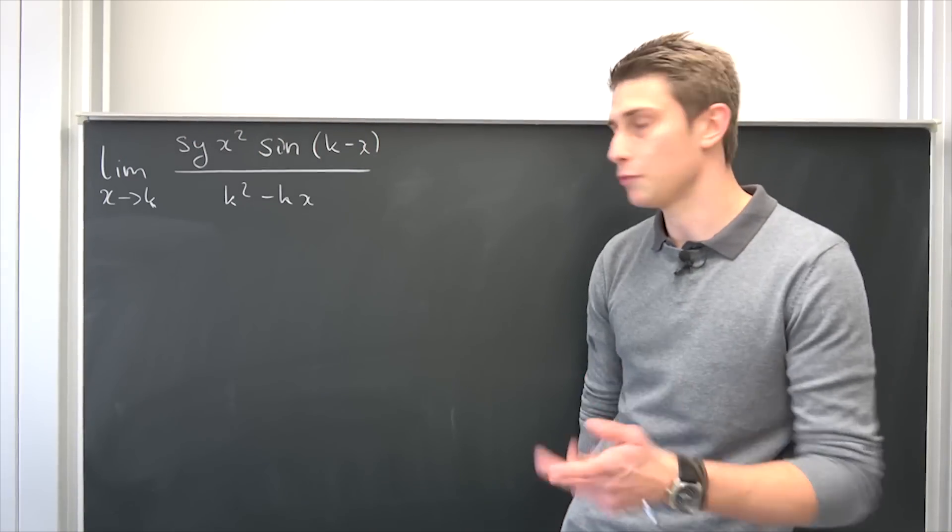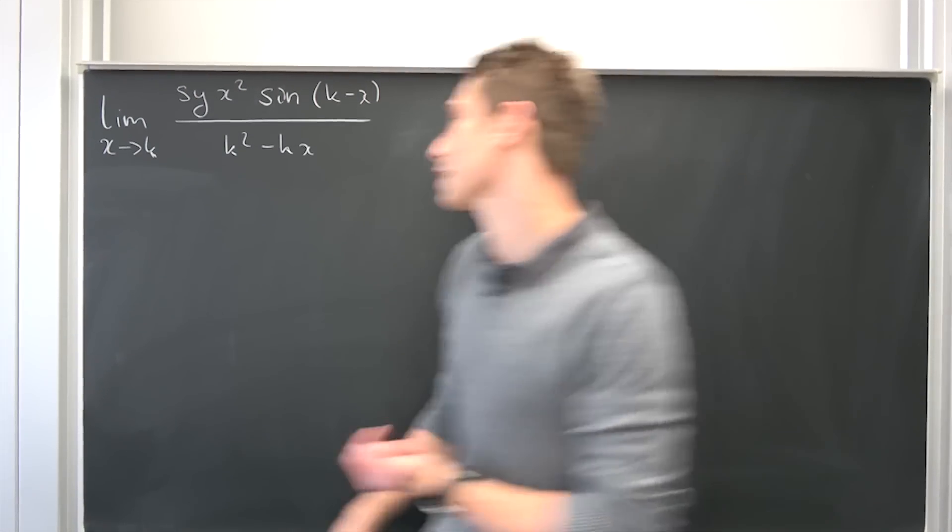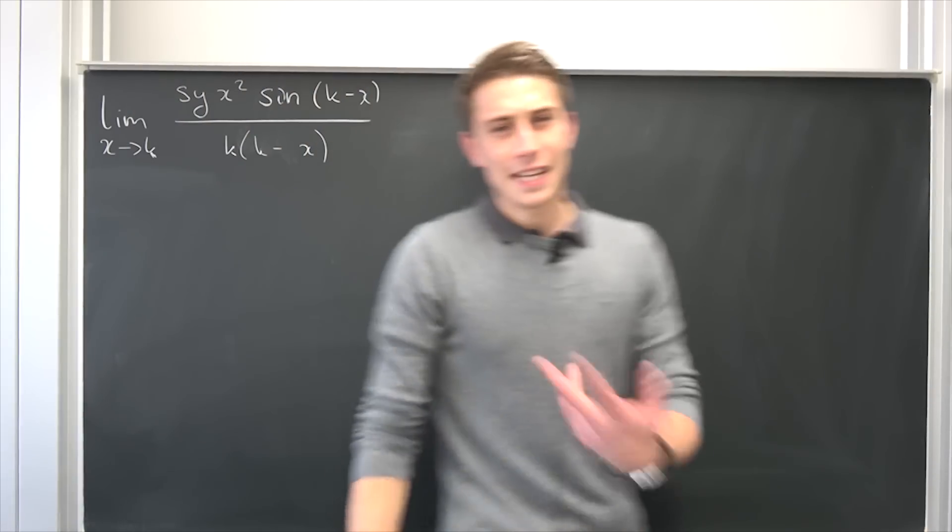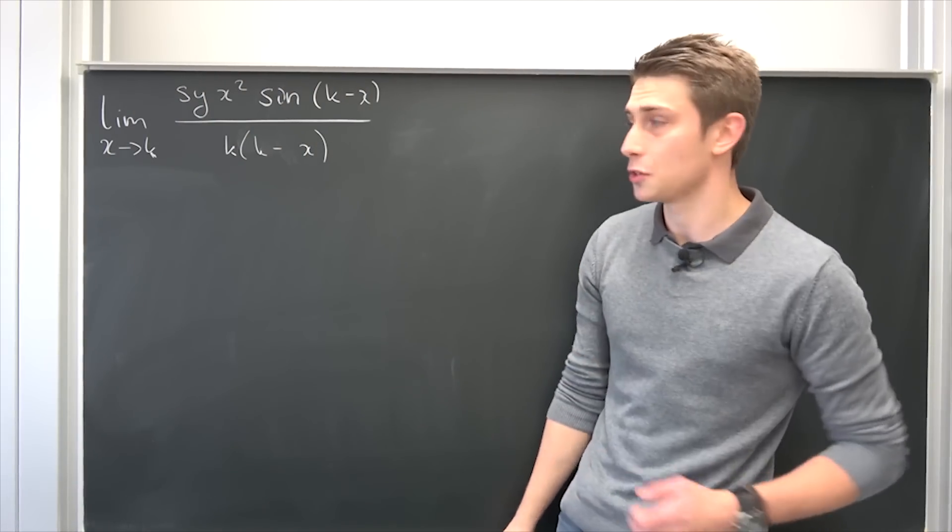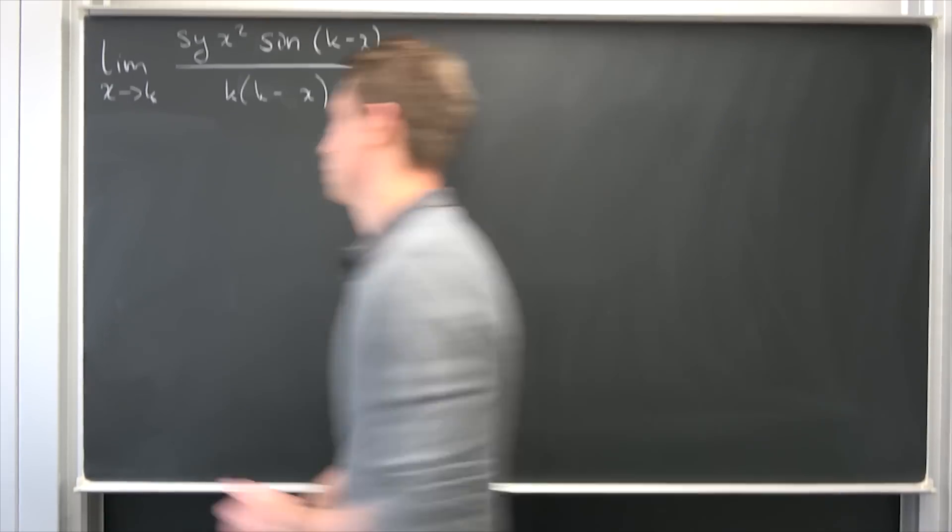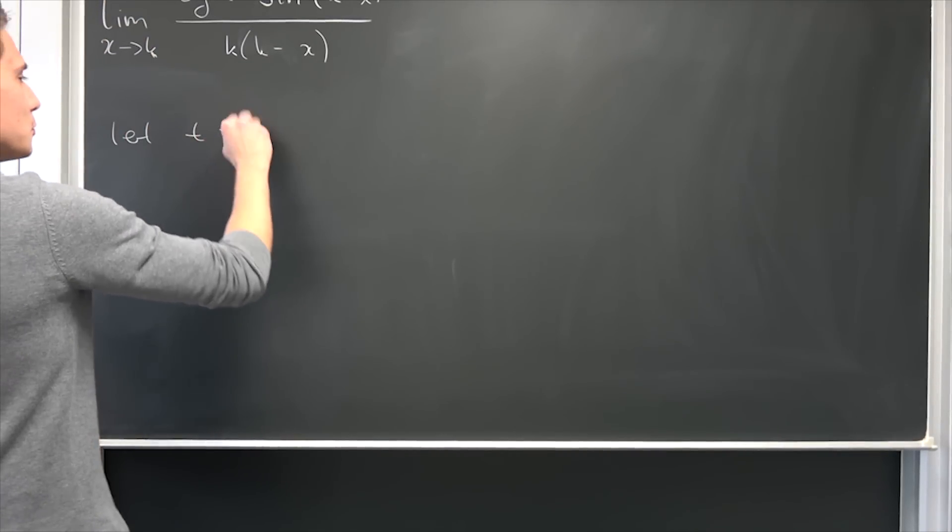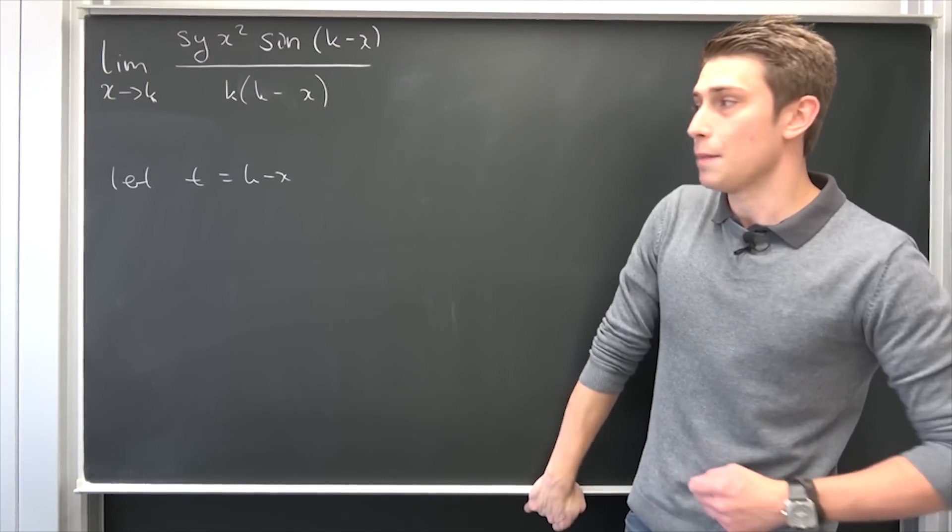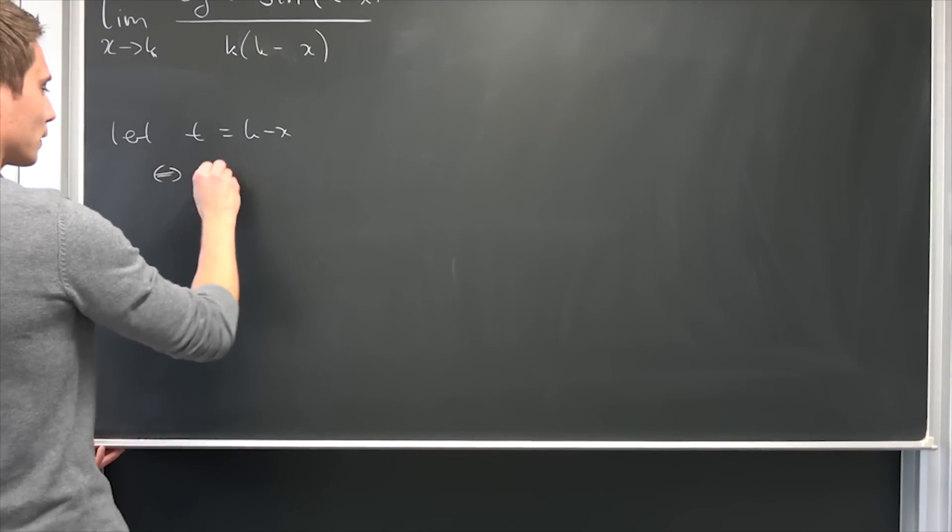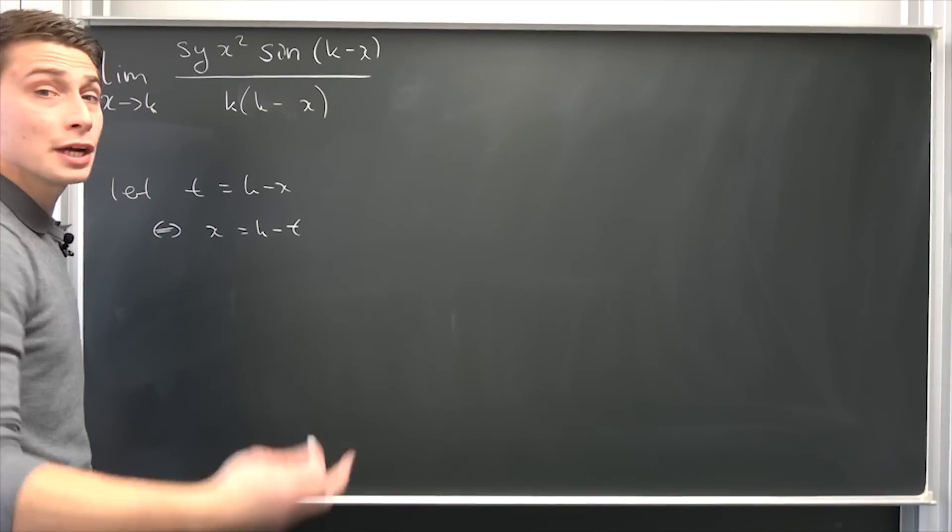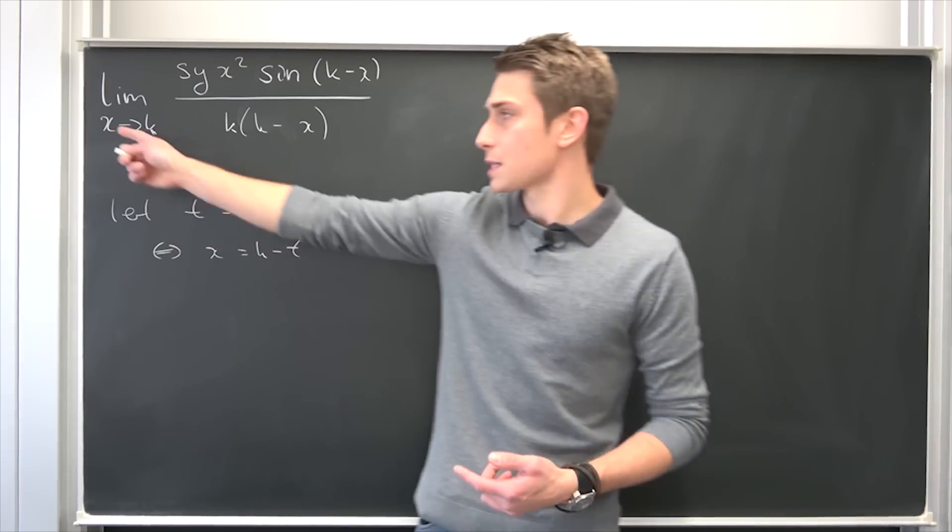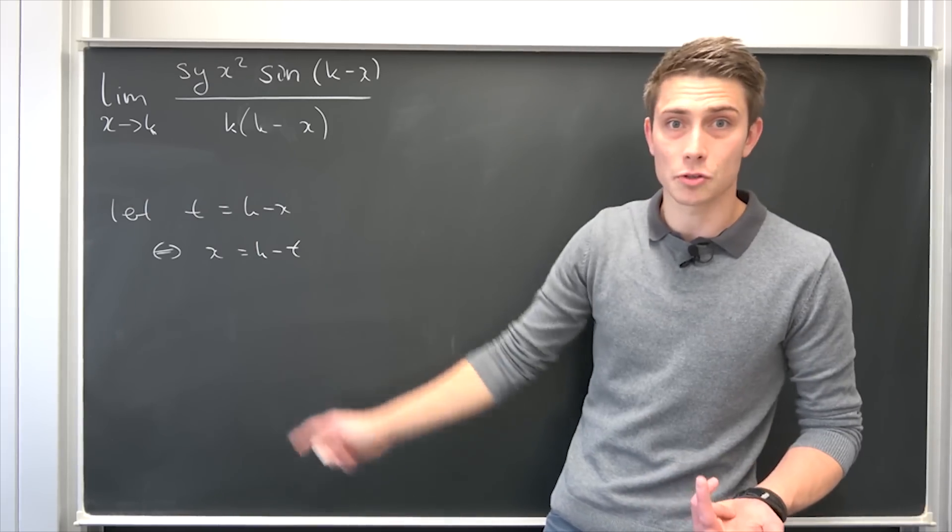We have seen before that if we factor out the k down here, we are going to end up with a factor of k minus x. Let's do this real quick, factoring out this k, we have k minus x down here. It does make sense to shift the limit a bit using a little substitution. We have a new variable approaching some kind of limit being x minus k. Let's call it t. So let t be equal to k minus x. What is going to happen to our x up here? Well, we can just solve for x, with x being k minus t. We have to change the limit. What happens to t right here when x approaches k? Well, t is going to zero in the limit.